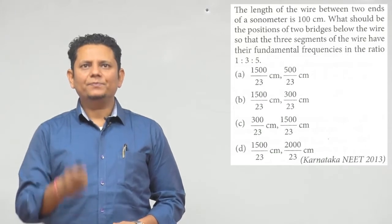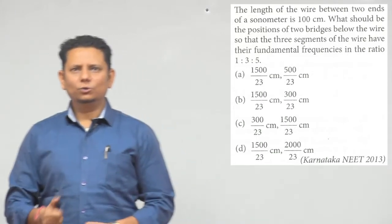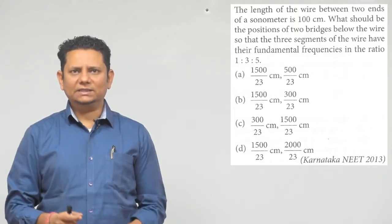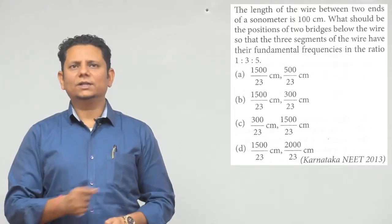Next question. The question says the length of a wire between two ends of a sonometer is 100 cm. What should be the position of the two bridges below the wire so that the three segments of the wire have their fundamental frequencies in the ratio of 1 is to 3 is to 5?